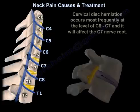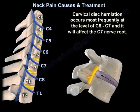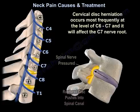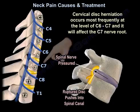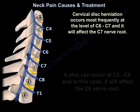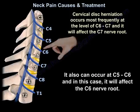Cervical disc herniation occurs most frequently at the level of C6-C7, and it will affect the C7 nerve root. It can also occur at C5-C6, and in this case it will affect the C6 nerve root.